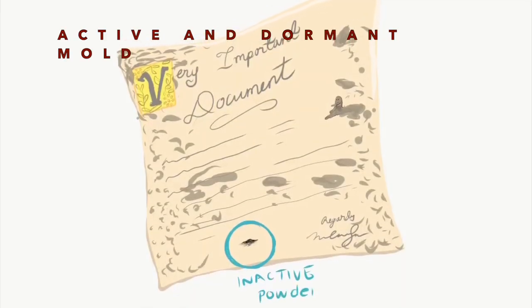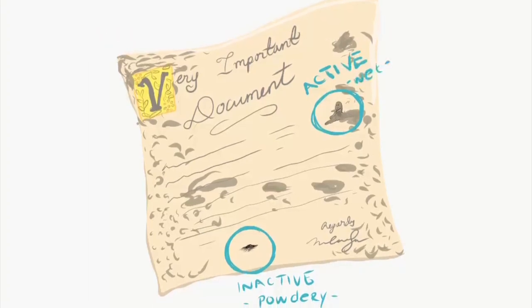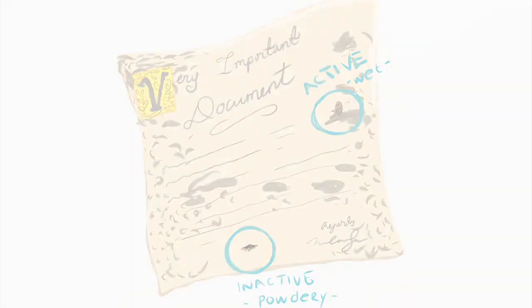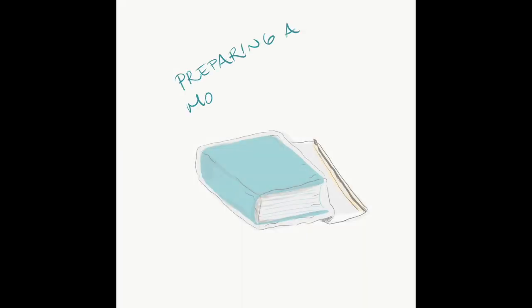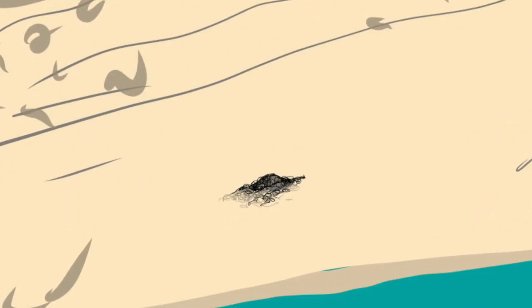Active mold is wet and slimy and needs to be dried to be removed. Dormant or inactive mold is dry and powdery and can be cleaned using a HEPA-fitted vacuum. Immediately freeze material that cannot be dried or cleaned within 48 hours. Keep in mind that freezing does not eliminate mold — rather it stops growth. In other words, it is possible to make active mold dormant by freezing; however, dormant mold can become active once more by placing the item in an inadequate or humid environment.